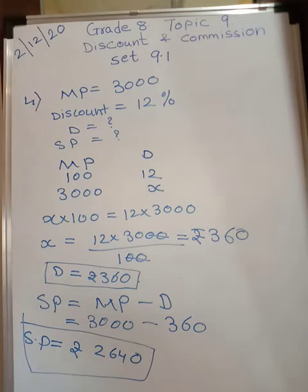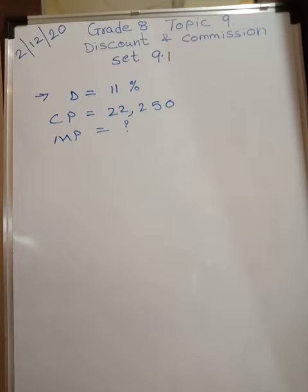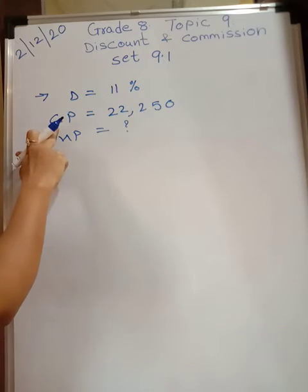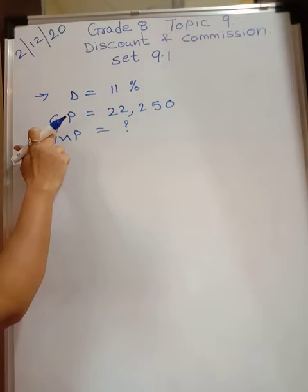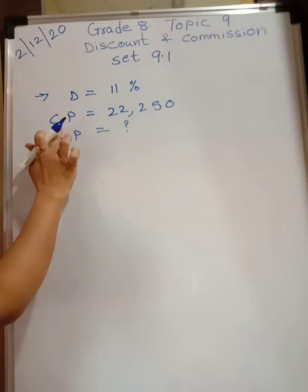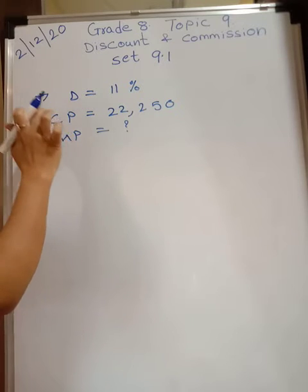Now let's go to the sixth question. A shopkeeper gives 11 percent discount on a television set and the cost price to the customer is rupees 22,250. Find the marked price. One important thing to remember: cost price for the customer is the same as selling price for the shopkeeper, since the shopkeeper sells it and the customer buys it.